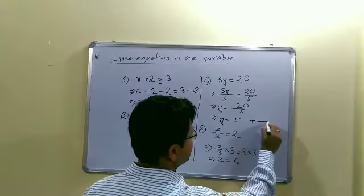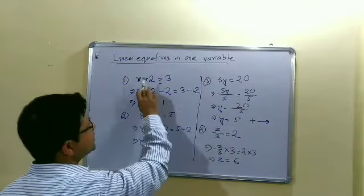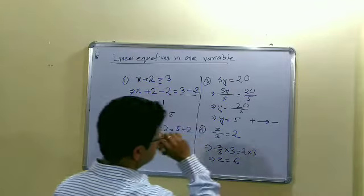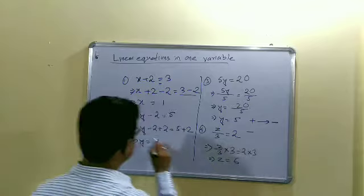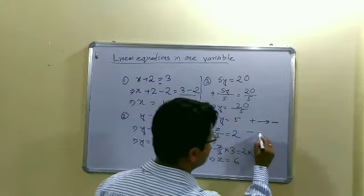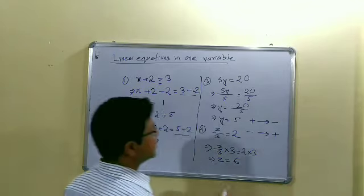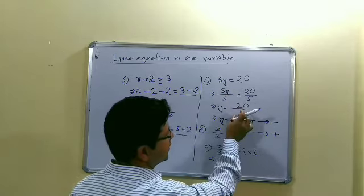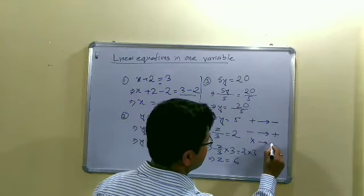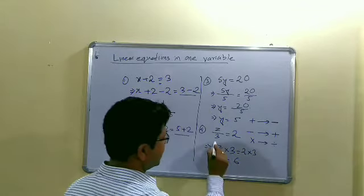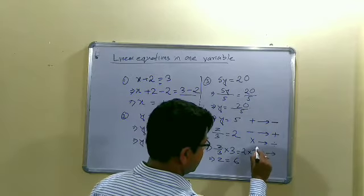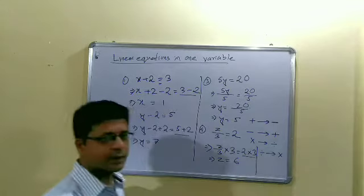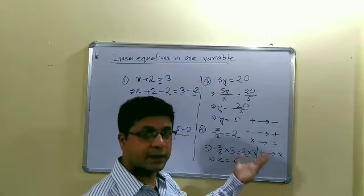So here by these four simple cases, what we have done: if plus is shifted on the other side, we make it minus. When minus is shifted on the other side, we have to add that number. If multiplication is there, we take the number on the other side and it becomes divide. Whenever there is divide, what we do? We multiply. So in this way the sign becomes exchanged.